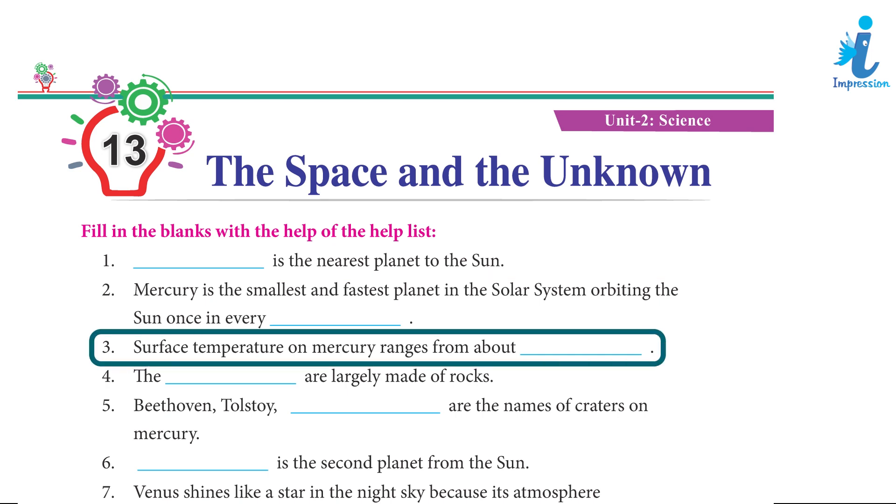3. Surface temperature on Mercury ranges from about minus 173 degrees Celsius to 427 degrees Celsius. 4. The crust and mantle are largely made of rocks.